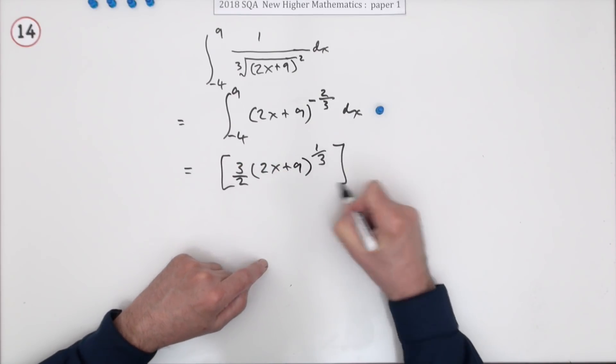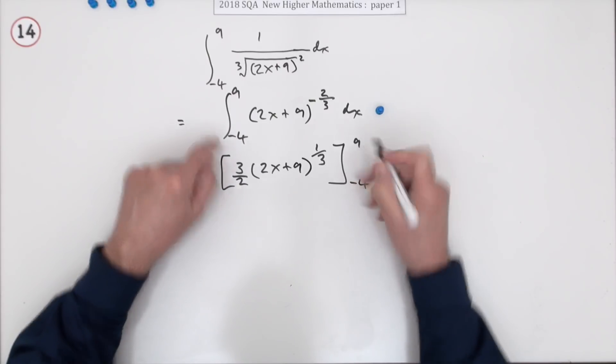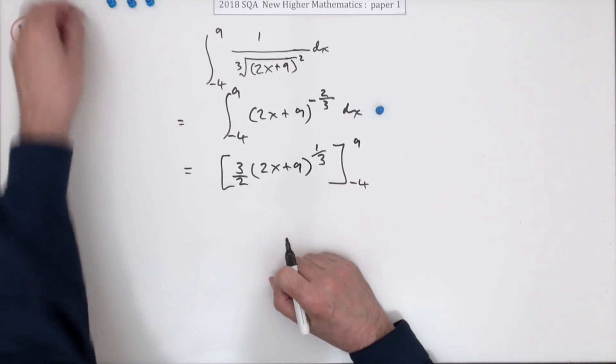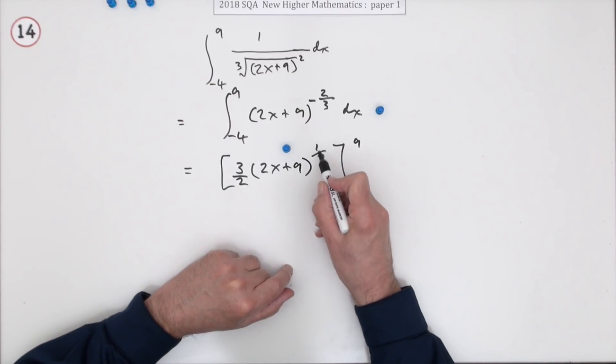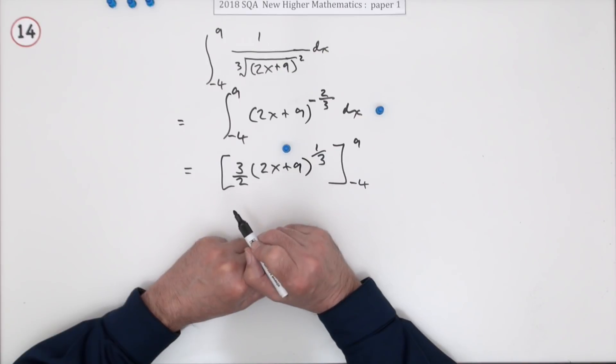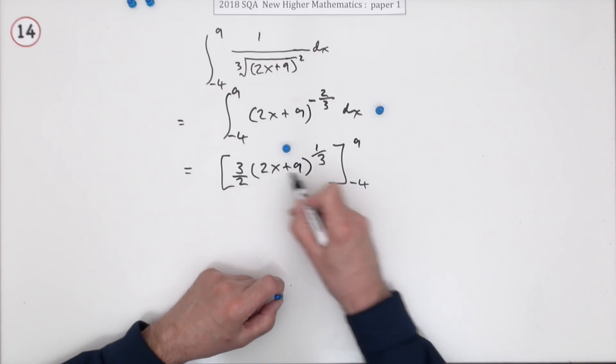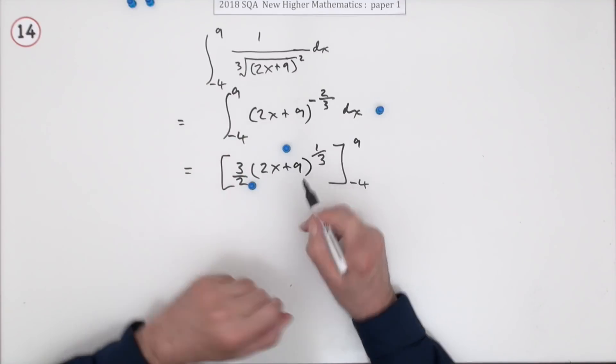That's what you're going to evaluate from negative 4 to 9. Now there were two parts to this. You get one mark for integrating by adding one to the power and dividing by that power. You get another mark for remembering there was an inner function - divide by the derivative of the inner function. So that was for that 2.